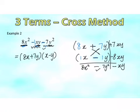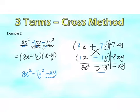Take note of a special case: teachers may rearrange the terms. The last term may not always appear at the end. For this type of question, reposition the expression so that a pure breed is at the front, the mixture is in the middle, and another pure breed is at the back before applying the cross method.